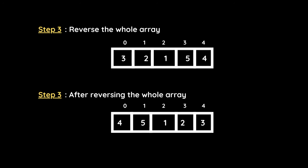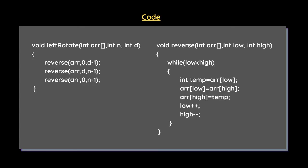In the last step, we reverse the whole array. The current order is three two one five four, and after reversing it, four and five come to the beginning and one two three are moved to the end. This is how we left rotate the array by d elements. Note that the array size and d are both variable — the array can have any number of elements and d can be anything.